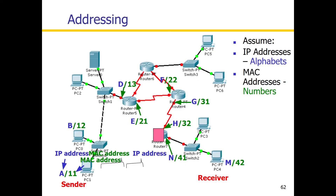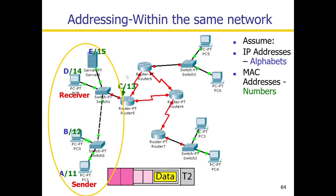At the last hop, we reach the receiver and we are done. If the sender and receiver are on the same network, there is no need for multiple hops. So that was the active combination of MAC address and IP address in action. Thank you for watching.